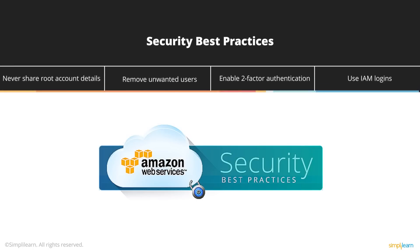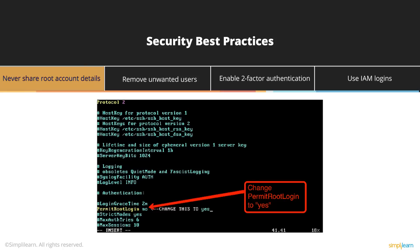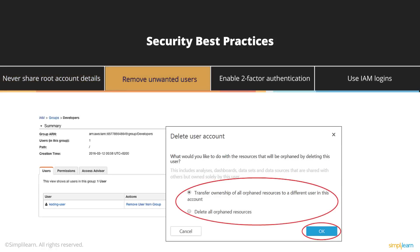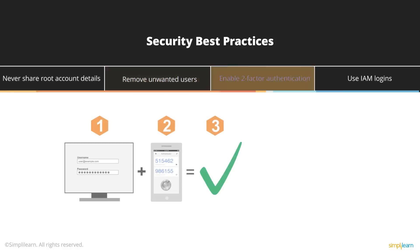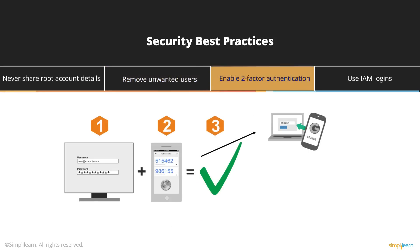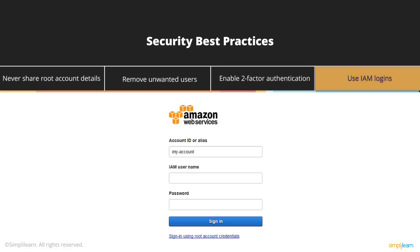From security best practices: never share your root account details with anyone, because whoever has root account details can do anything in your account. Make sure that when people leave your organization, you remove their access and don't keep stale accounts. You should also enable two-factor authentication — either with Google Authenticator or a hardware token device that generates a random six or four digit number — as an added layer of security. Also enable IAM login and don't give root access to even trusted users, because in IAM you have a name and ID that shows who did what and when.